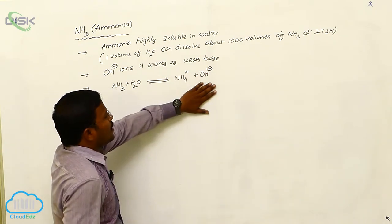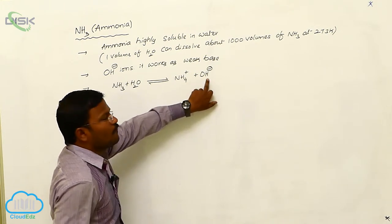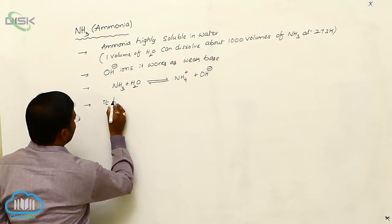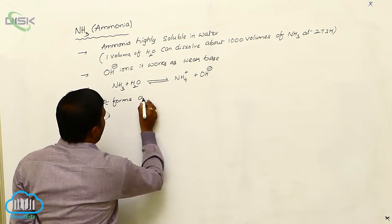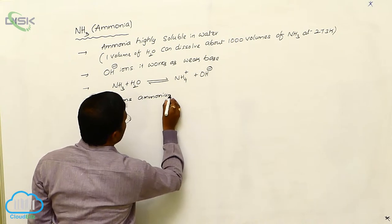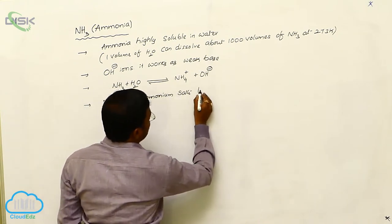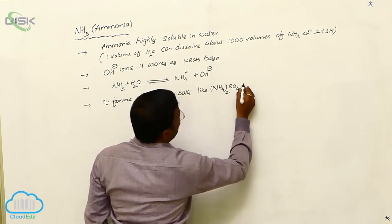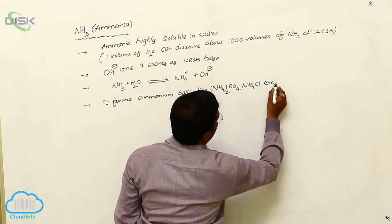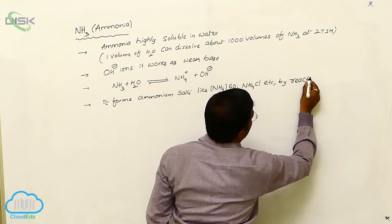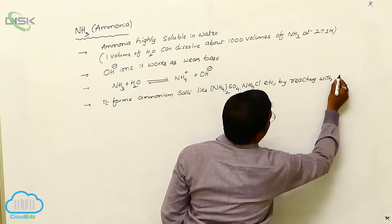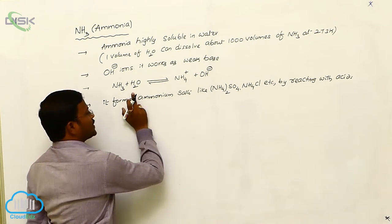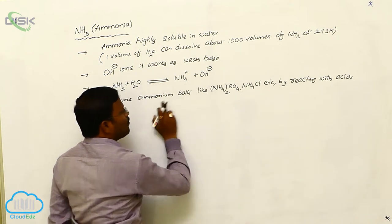The basic character of ammonia generally results from the formation of OH⁻ ions, so it works as a weak base. Due to this basic character, it forms ammonium salts — such as ammonium sulfate and ammonium chloride — by reacting with acids. Because of its mild or weak basic character, it can easily react with acids to produce ammonium salts.